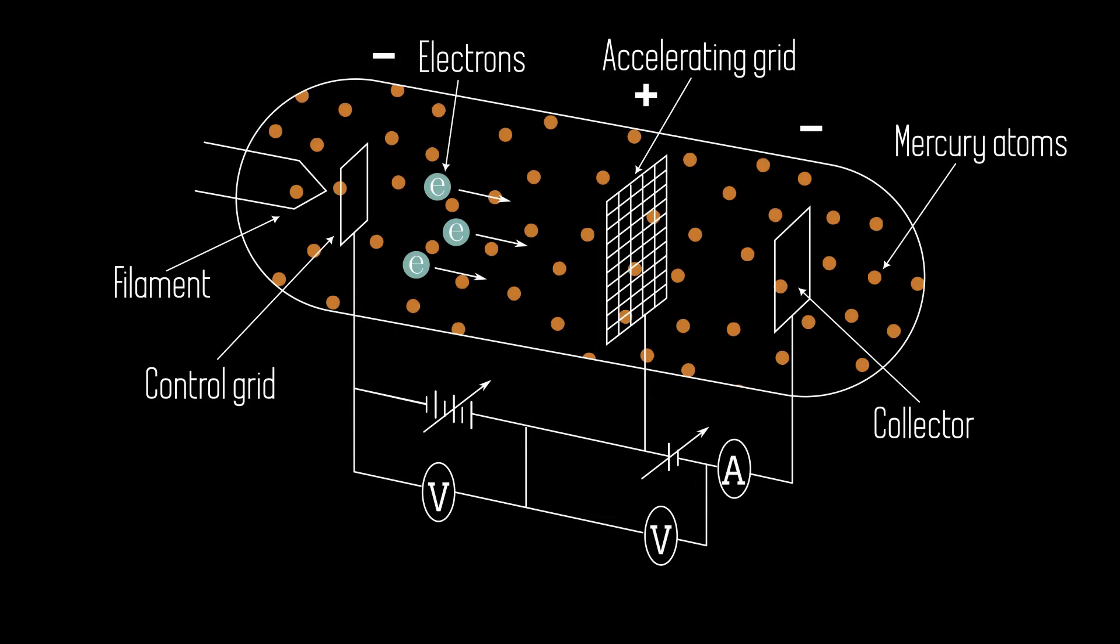The Frank-Hertz tube is now constructed in such a way that low energy electrons can be distinguished from high energy electrons. The acceleration voltage can be adjusted to accelerate the electrons emitted from the filament accordingly.